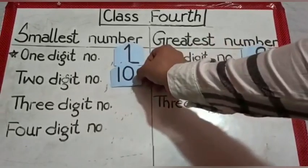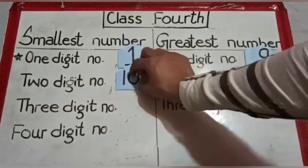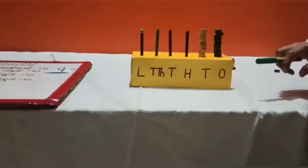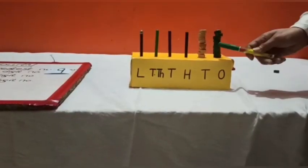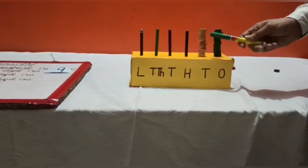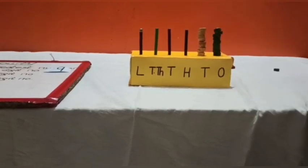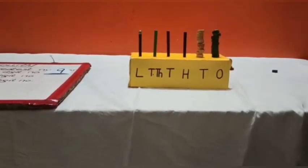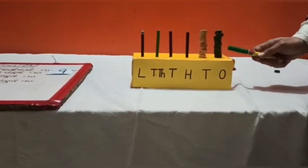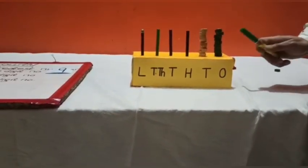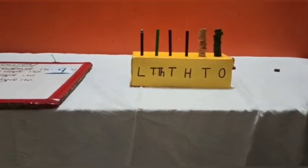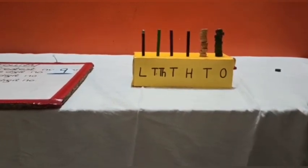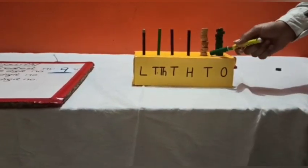Now students, here we have 9 beads in the 10's rod — meaning 90 — and 9 beads in the one's rod — meaning 9. So students, the maximum 2-digit number, or the greatest 2-digit number, is 99.